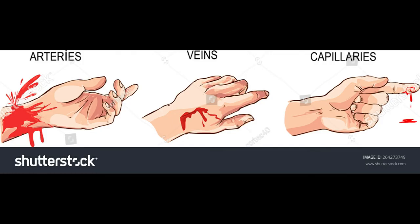To recognize external bleeding: injuries damage blood vessels and cause bleeding. There are three types of bleeding related to the types of blood vessels damaged — capillaries, veins, and arteries. Capillary bleeding oozes steadily but slowly; it's the most common type and the easiest to control.